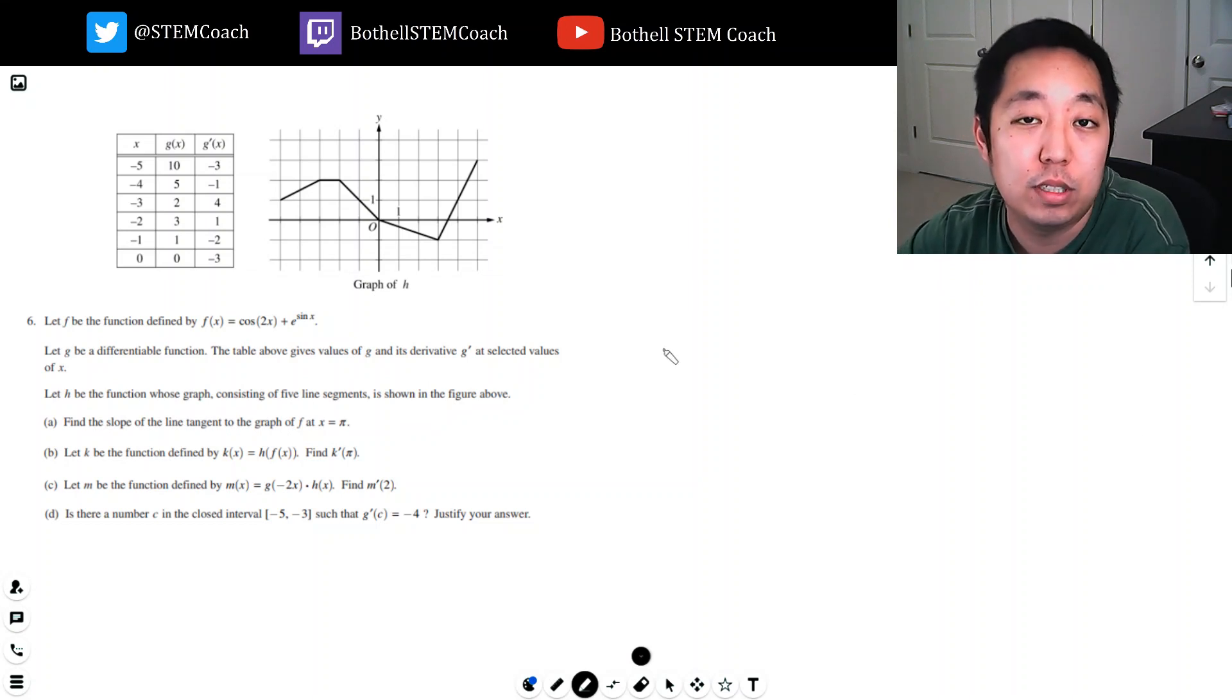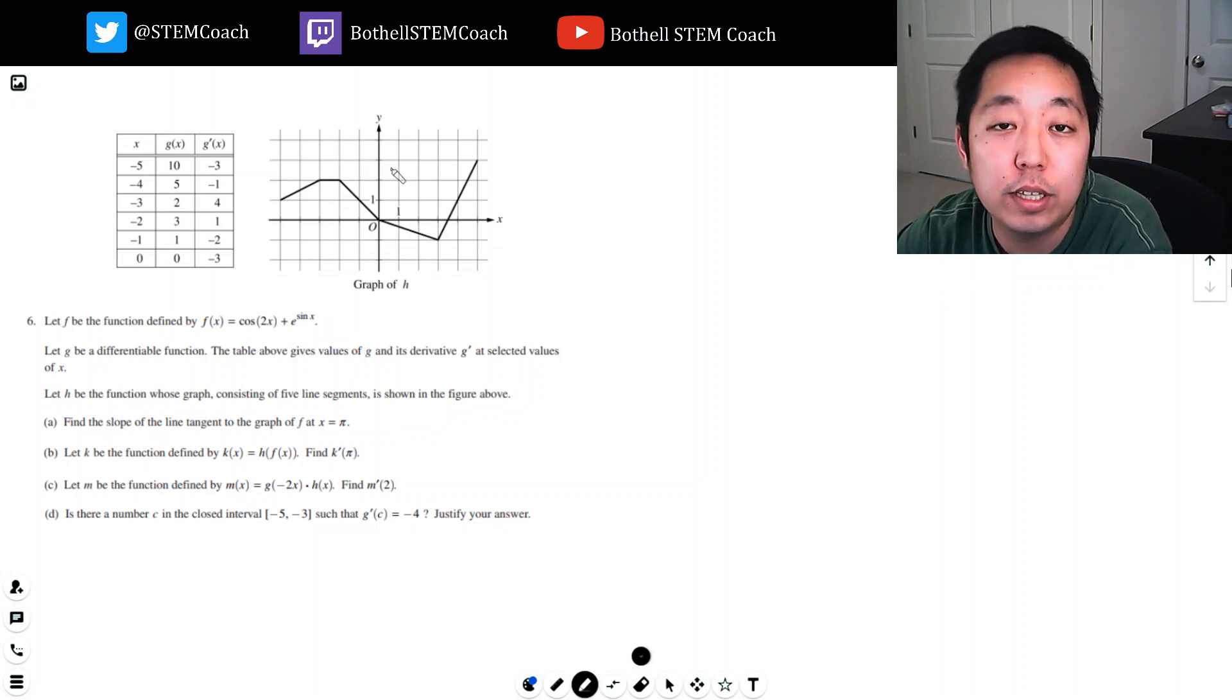Hey guys, this is Alan with Bothell STEM Coach and I am doing the last AP Calculus 2017 free response question, number six. Let f be the function defined by f(x) equals cosine 2x plus e to the sine x. Let g be a differentiable function. The table above gives the values of g and the derivative g prime for selected values of x. Let h be a function whose graph consists of five line segments as shown in the figure above.